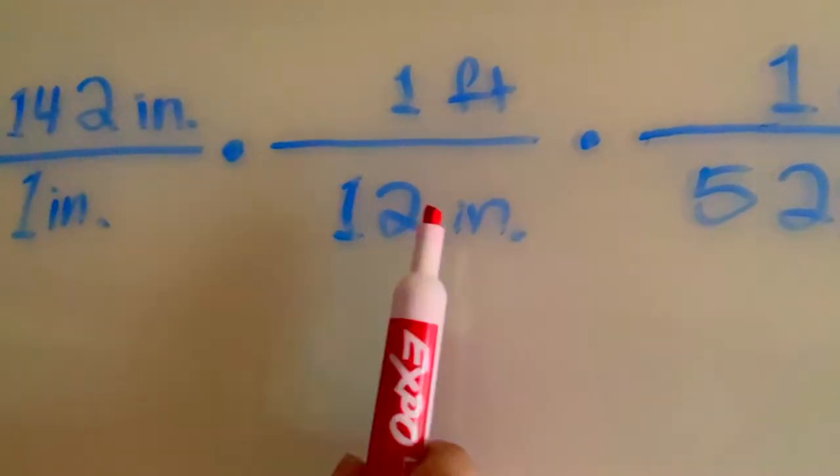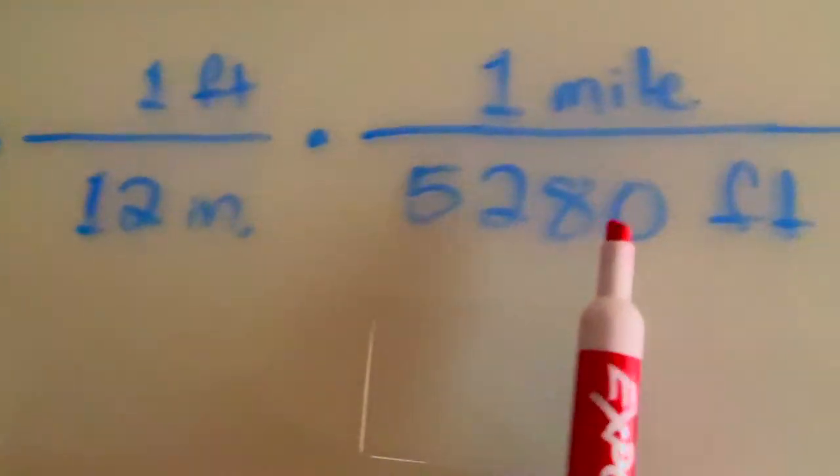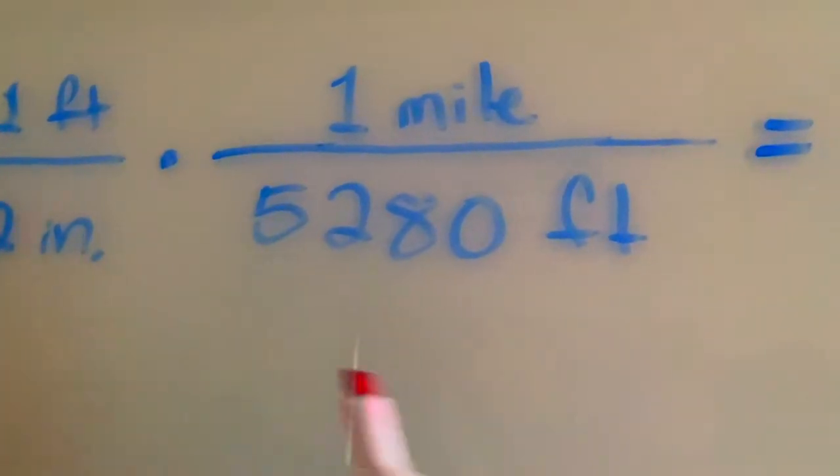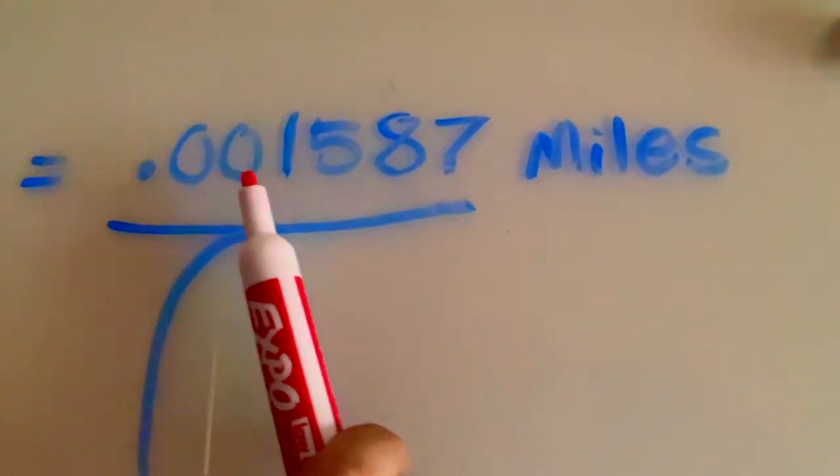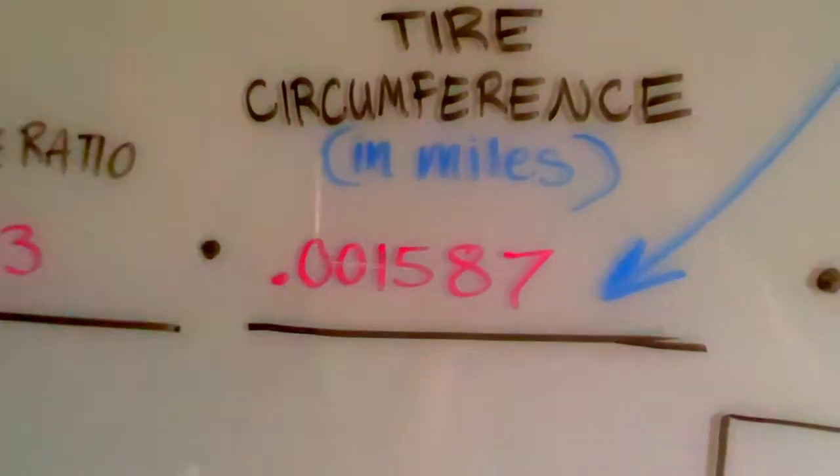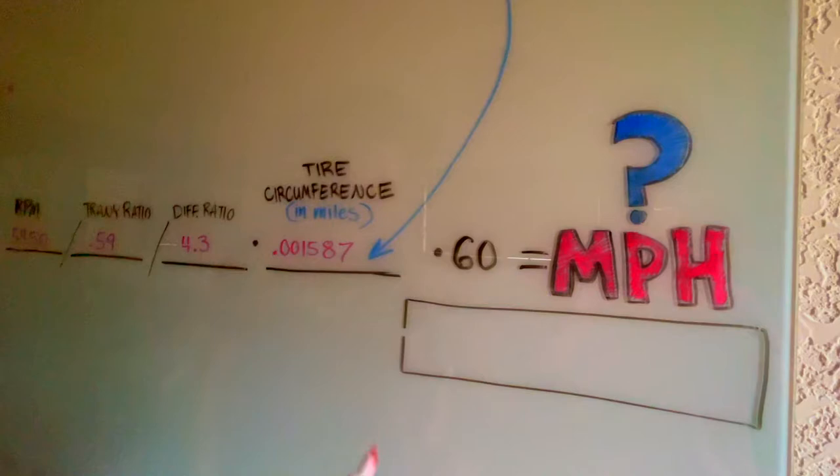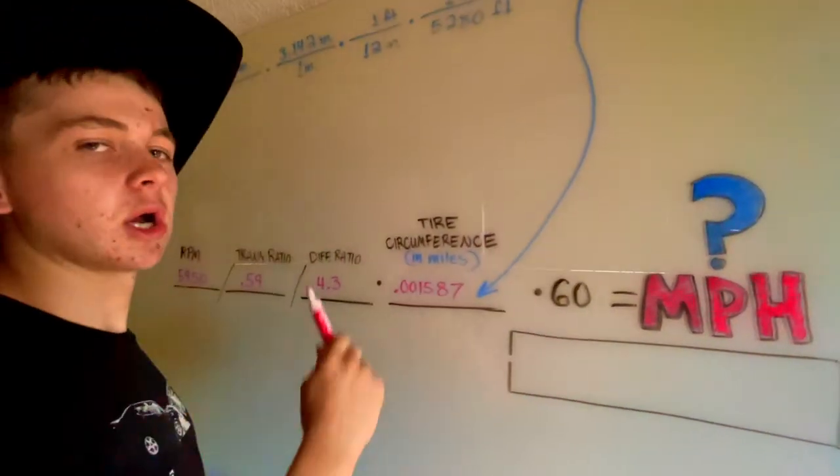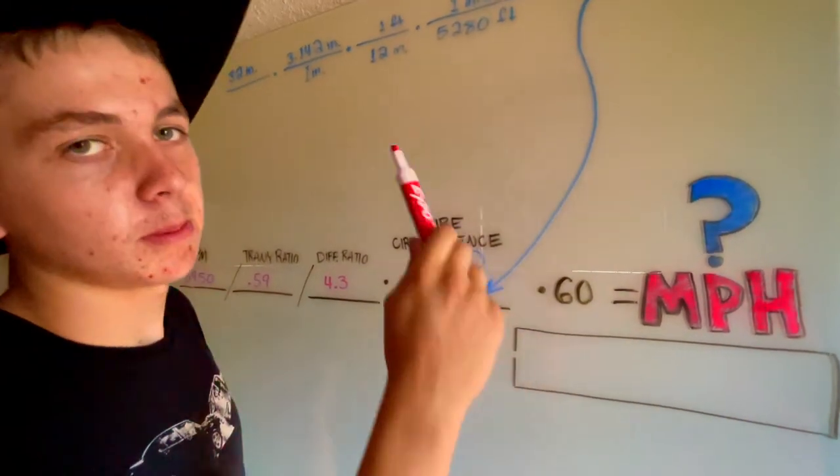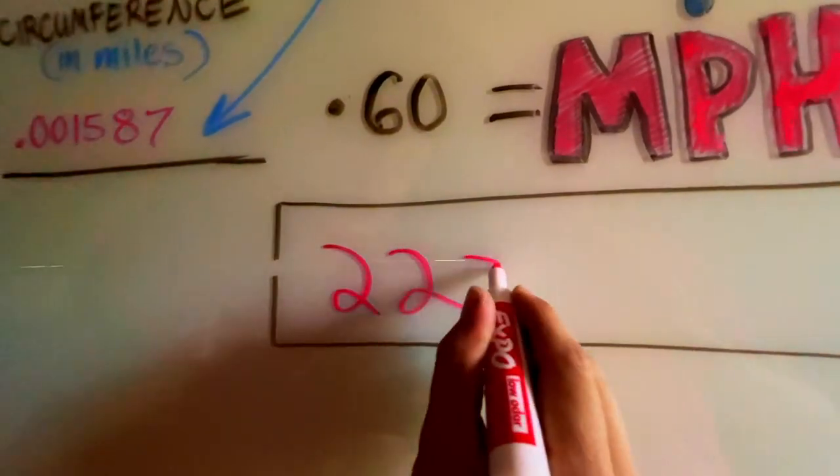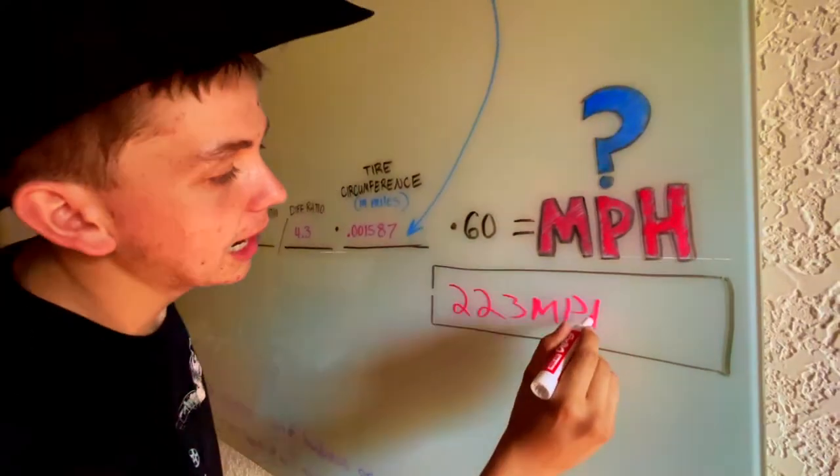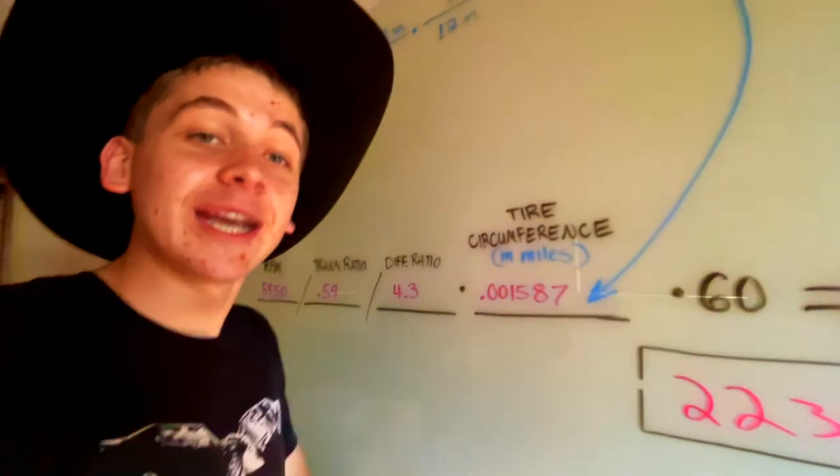Our tire circumference in miles is 0.001587. Multiply, divide, have lots of fun. Then we multiply by 60 to get it into hours, because it was in minutes (RPM - revolutions per minute). We end up with 223 miles per hour. Remember, that is the mechanical top speed in a world with no air, no hills, no speed limiters - none of that nasty stuff.